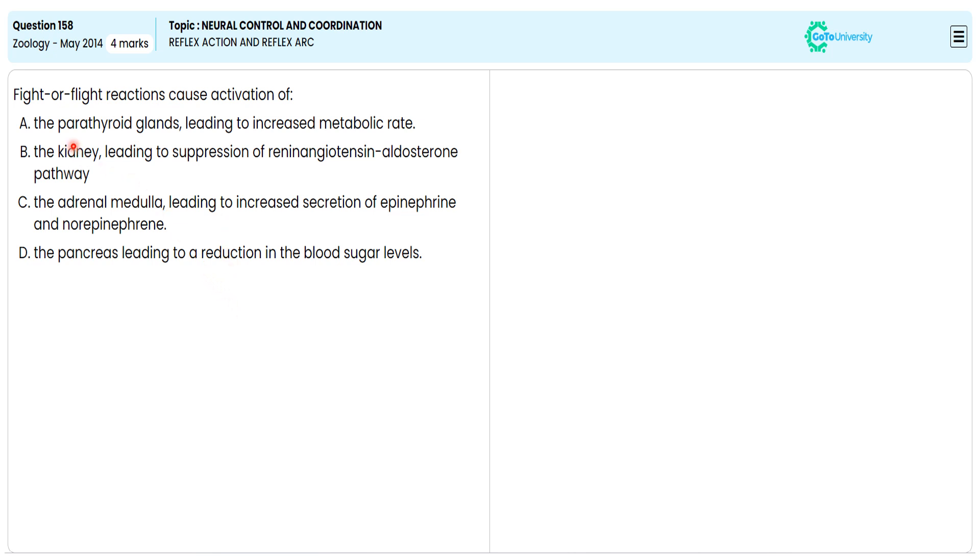Why are we avoiding option A? The parathyroid gland produces parathyroid hormone and calcitonin to govern calcium metabolism, so it's not responsible for fight-or-flight reactions.